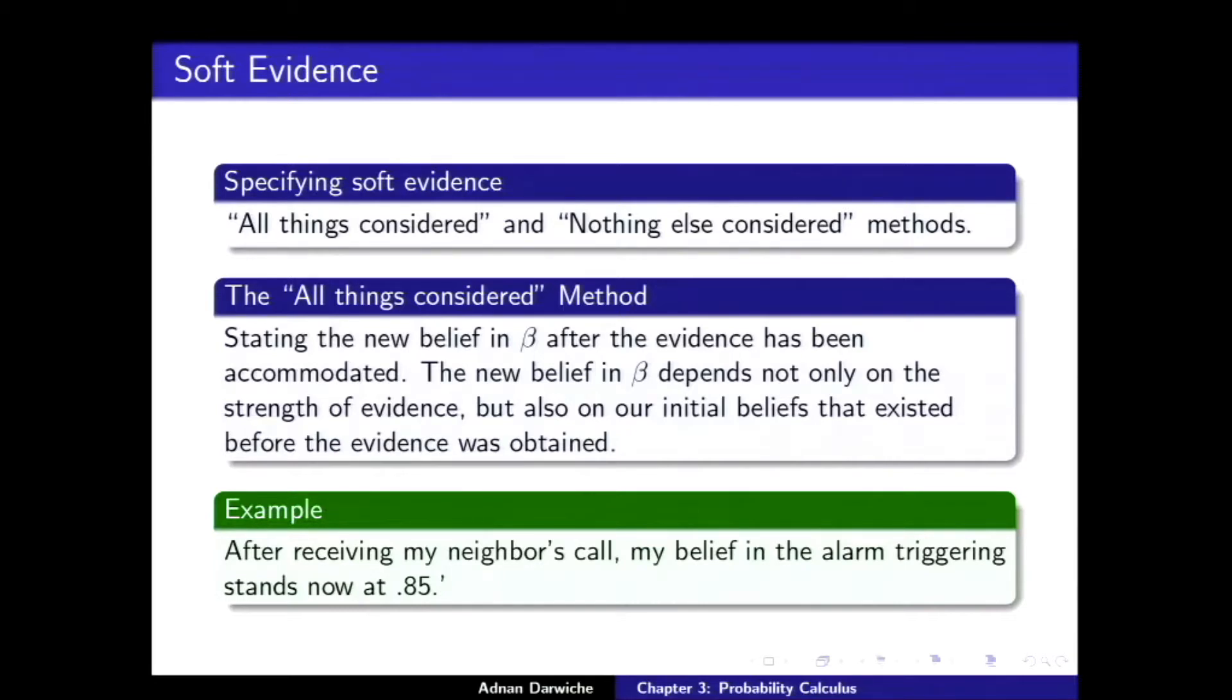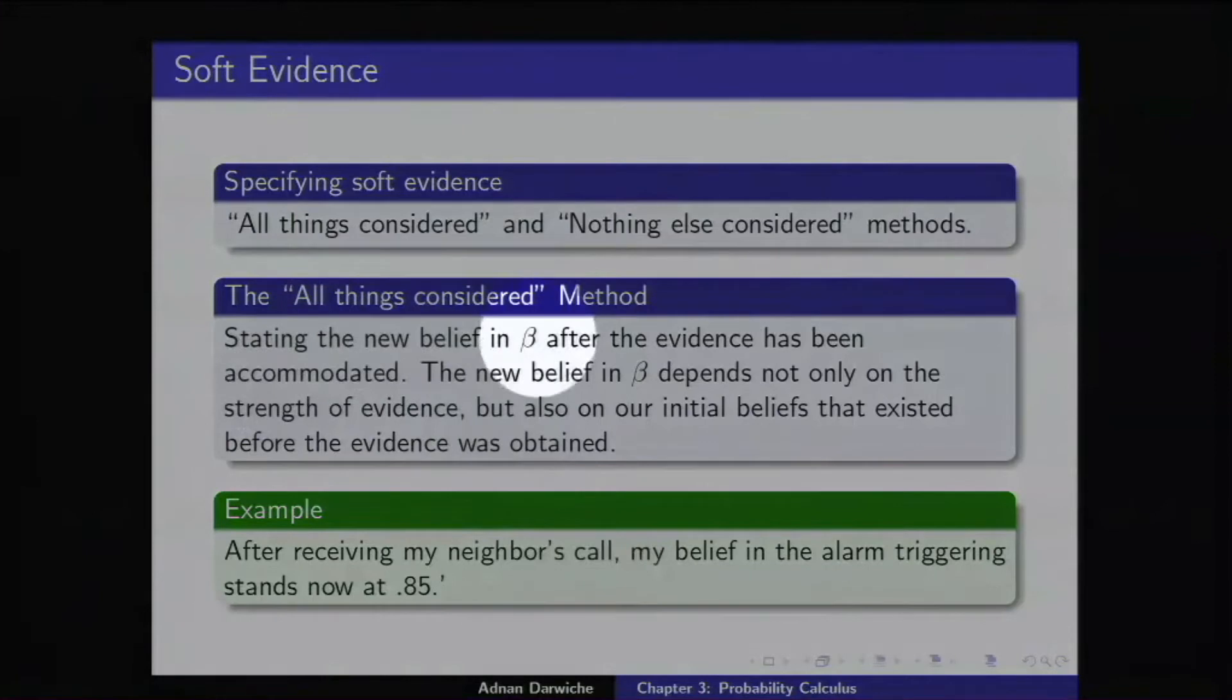Here's how it goes. The first method, which is the All Things Considered method, the difference between them is how do I specify evidence. You learn some soft evidence about beta, and the way you communicate this is by saying, after accommodating the soft evidence, now my belief in beta is 85 percent. Here's an example. After receiving my neighbor's call for the alarm trigger, my belief in the alarm triggering is now 85 percent. Simple, right?